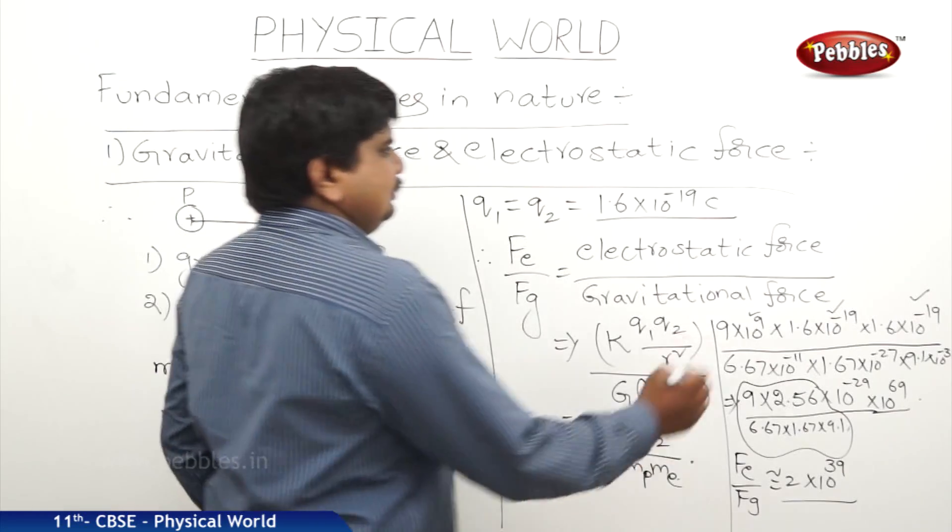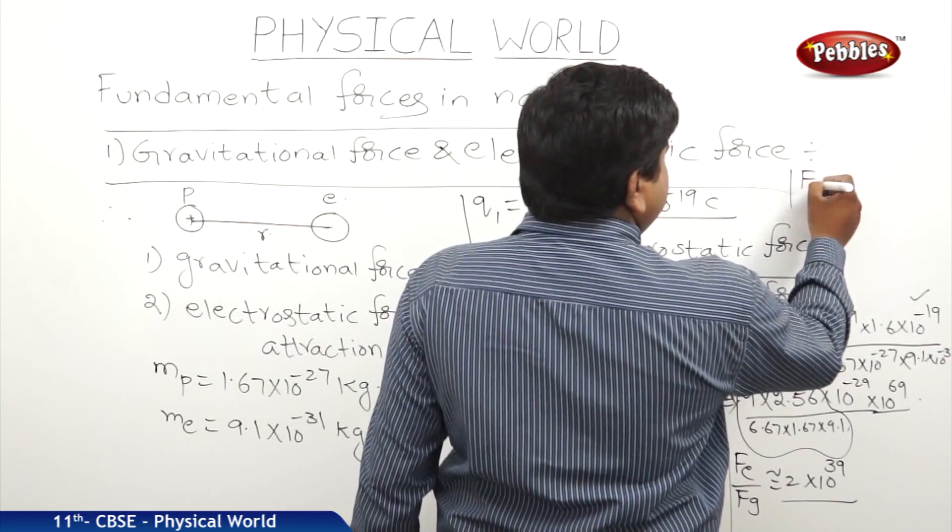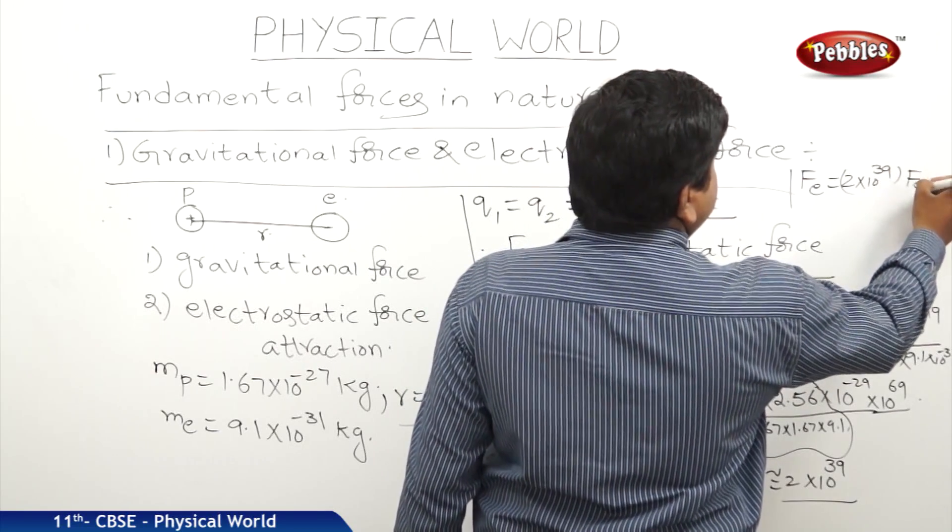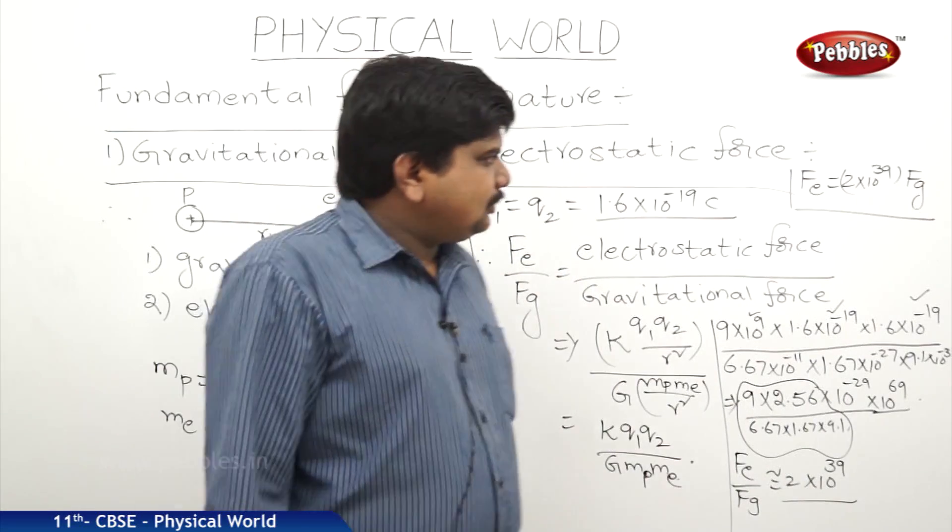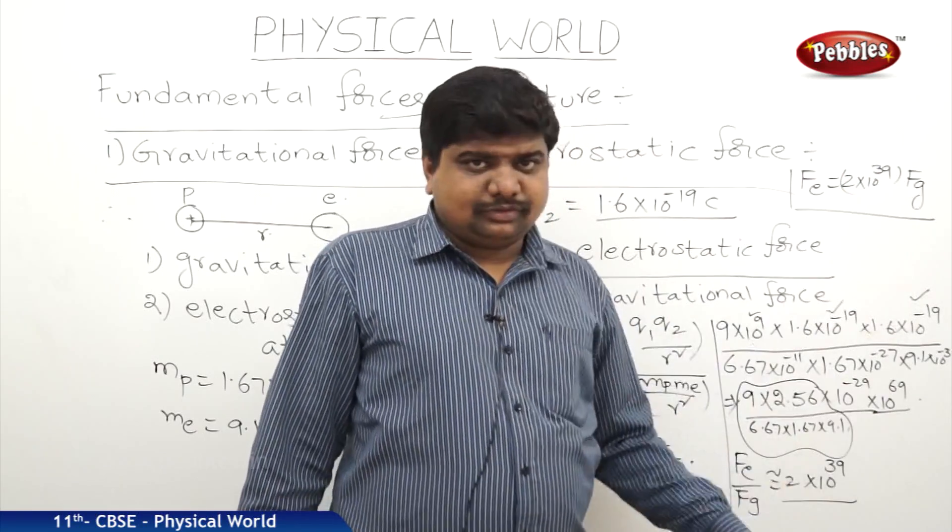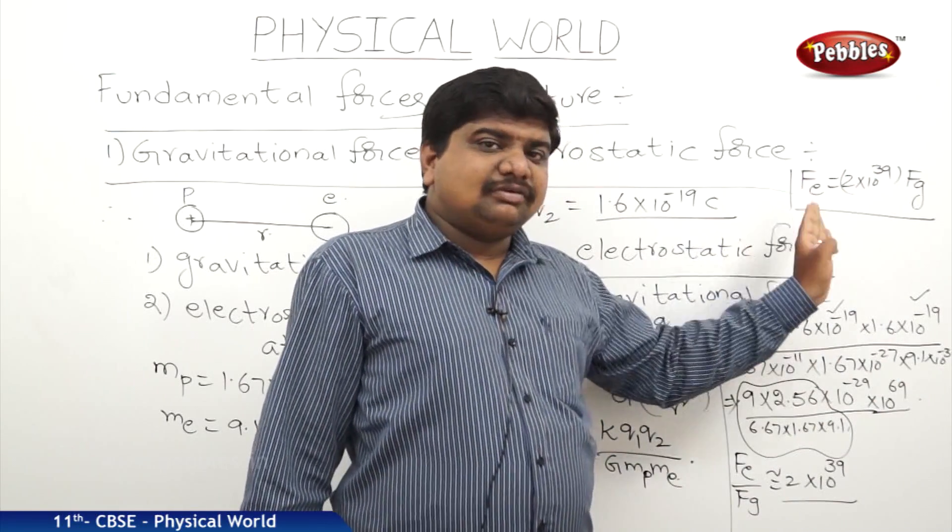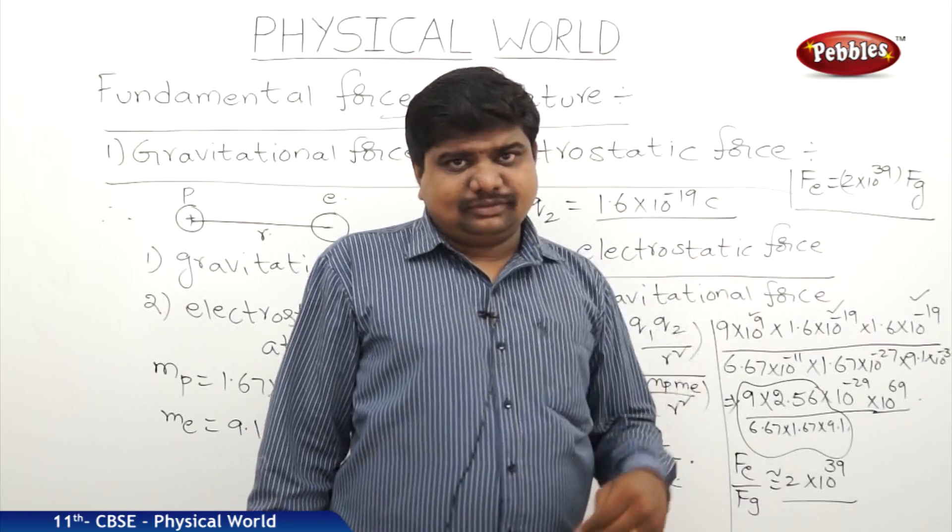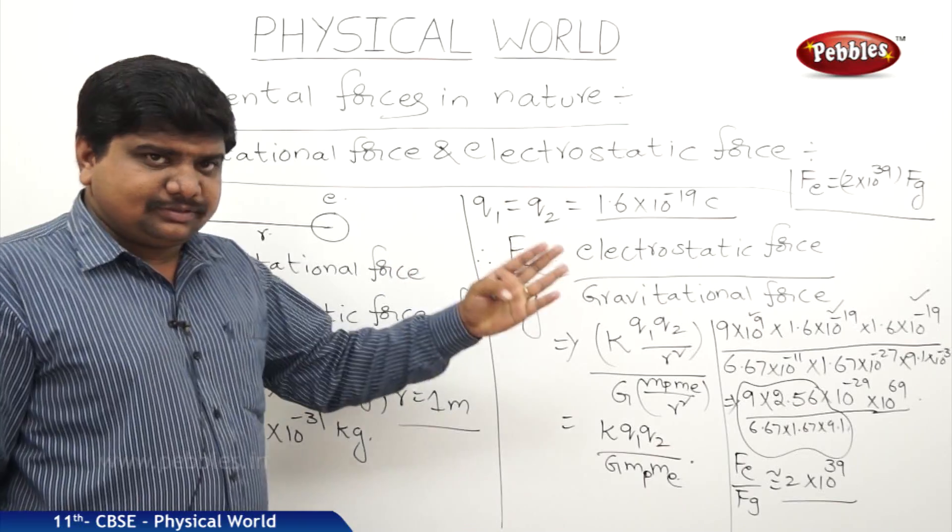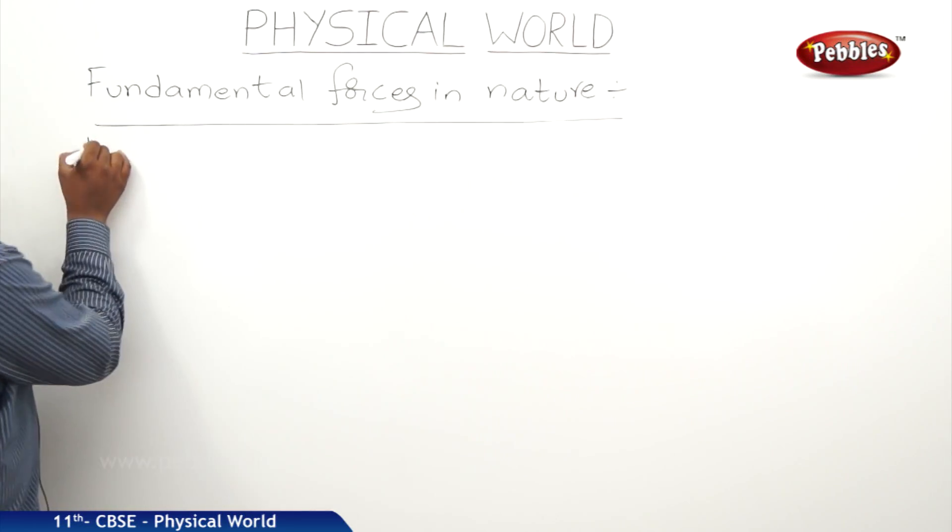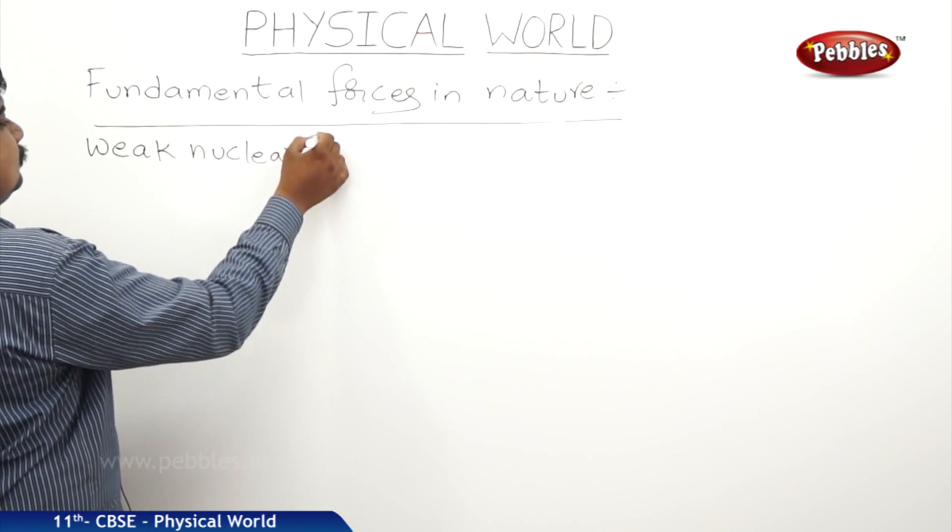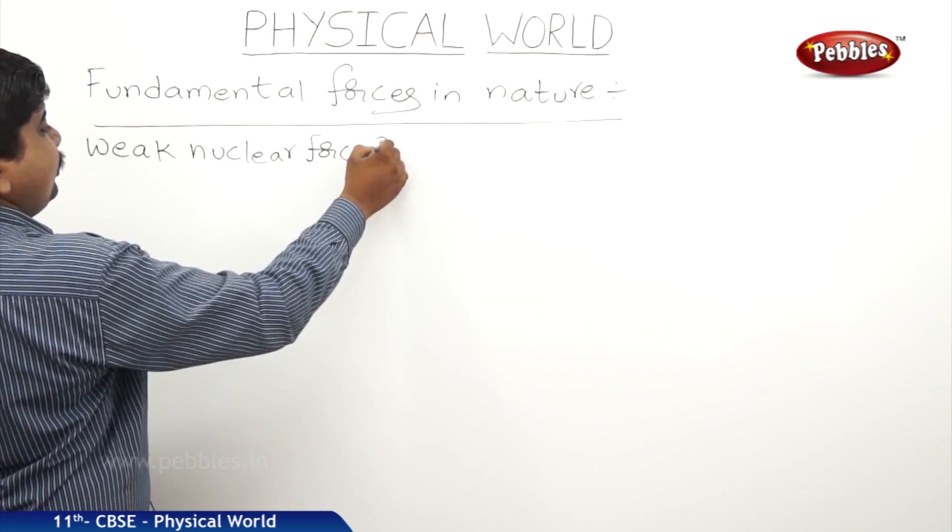From this equation, we can write that FE is 2 into 10 to the power of 39 times of FG. So, electrostatic force is 2 into 10 to the power of 39 times of the gravitational force. We can say that electrostatic force is stronger than the gravitational force. Such like that, we will see the comparison of strong and weak nuclear forces also.